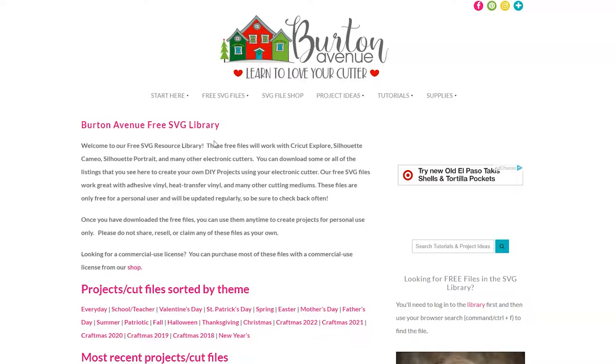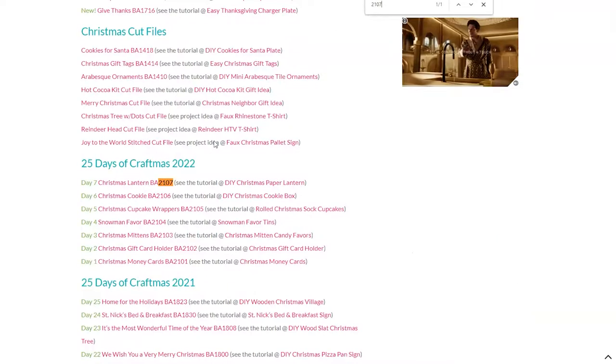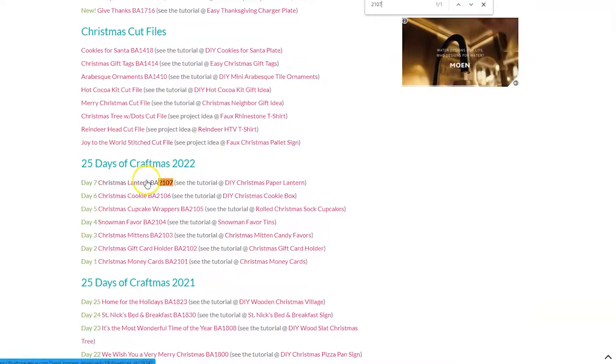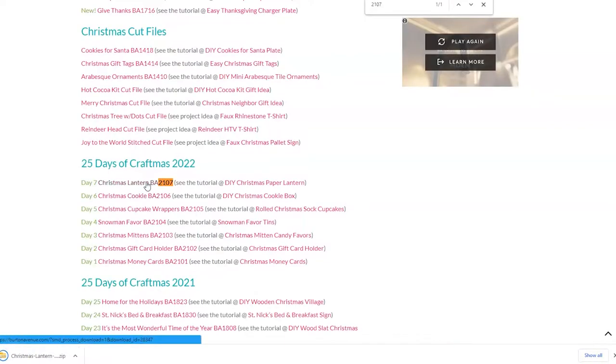For this project we're going to be using the cut file called Christmas Lantern BA2107. To find it, just use your browser search and type in 2107. Once you've found that link, go ahead and click on it. And the files will be downloaded onto your computer.